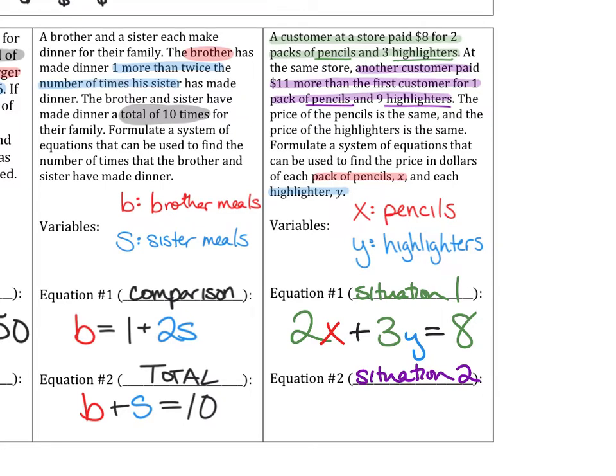This is the second customer. How many pencils did this customer buy? So one and then what letter? X, because X is the pencils. They also bought how many highlighters? Nine. That's a lot of highlighters. So nine Y, because Y is highlighter. And they spent a total of how much money? 11. They did not spend $11. This is a tricky. 11 more. So what number is 11 more than the first customer? 19. 11 more than what they spent. Totally tricky. Make sure. These are just word problems that we have to put together.